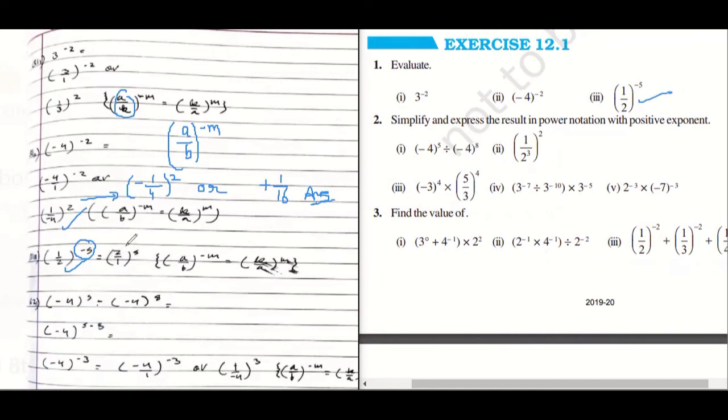reciprocating the base. That is 1 upon 2, that is 2 upon 1, that we can write it as 2 power 5. And 2 power 5, you can solve it or you may not solve it. That's perfectly fine.